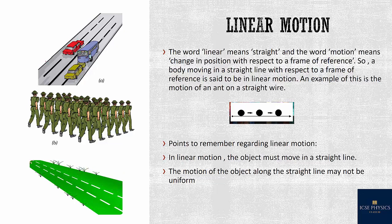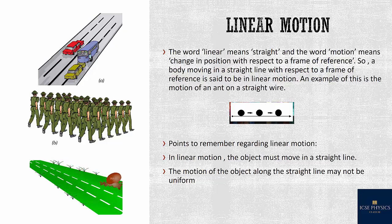The car is in motion with respect to the road, so the frame of reference here is the road. A body moving in a straight line with respect to a frame of reference is called linear motion.